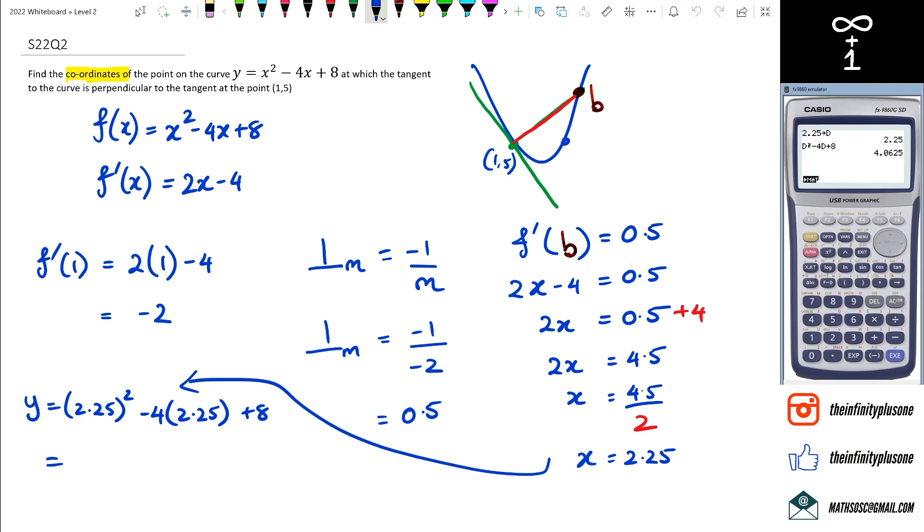So I can just go alpha D squared minus 4 alpha D plus 8. Just another little tip for you guys to kind of make things, the substitution a little bit easier for you on your graphics calculator. Cool. So the point that we have here is 2.25 and 4.0625.